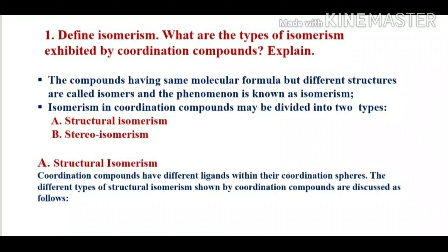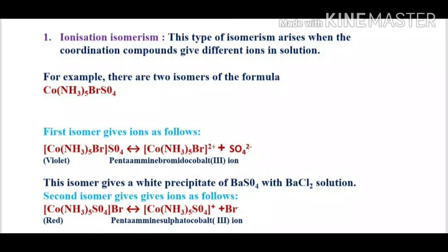The first type is structural isomerism. In structural isomerism, the coordination compounds have different ligands within their coordination spheres. The first subtype is ionization isomerism, which arises when the coordination compounds give different ions in solution.